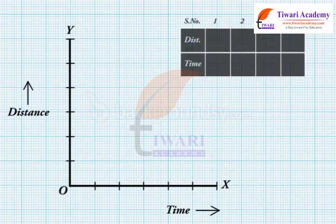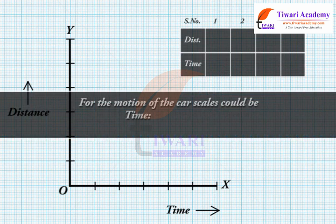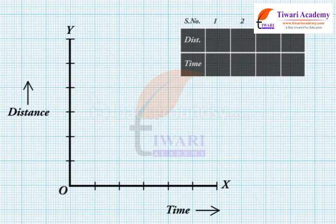Choose a scale to represent the distance and another to represent the time on the graph. For the motion of the car, the scales could be: time — one minute equals one centimeter; distance — one kilometer equals one centimeter.